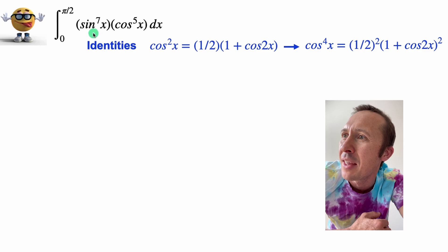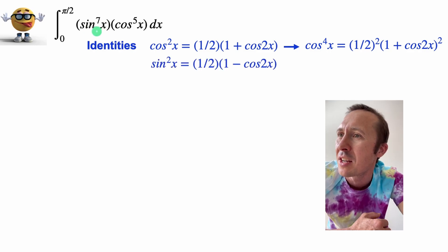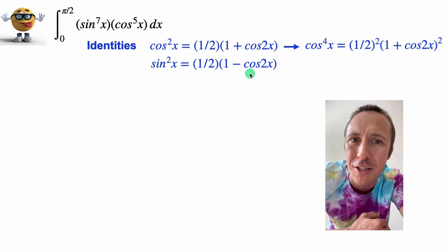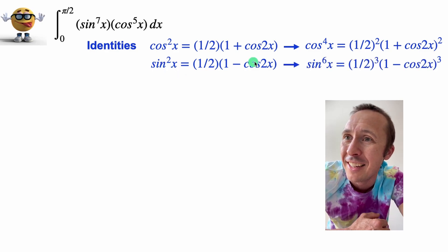And then I did the same thing for the sines. Because we have a lot of sines, I said sin²x is one half times one minus cos 2x. And because there's seven here, I wanted to get as close to seven as possible, so I cubed this identity.